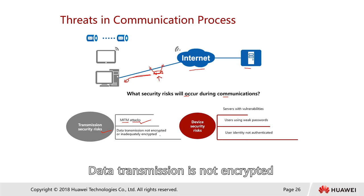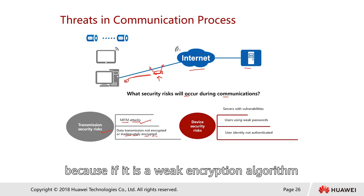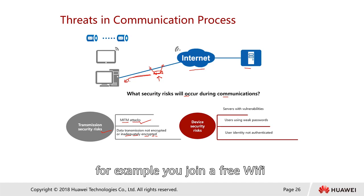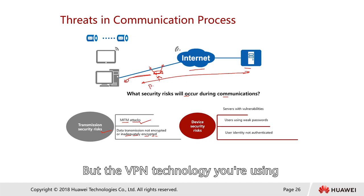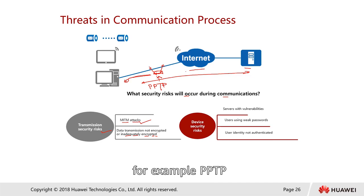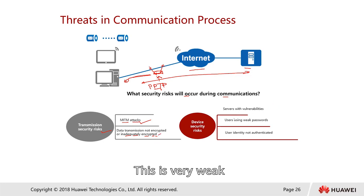Data transmissions that are not encrypted, or that use an inadequate encryption algorithm, are also not recommended. For example, if you join free Wi-Fi and form a VPN connection back to your office, but you're using an old VPN technology like PPTP — that's a first-generation VPN — it can be easily cracked and is considered very weak.